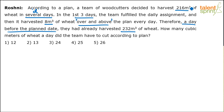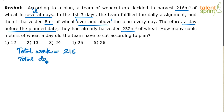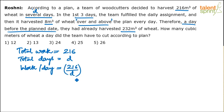This is very easy to solve. Total work to be done is 216. Total number of days is d. Work per day is therefore 216/d. For example, if they want to do it in 2 days: 216/2 = 108 cubic meters per day. If in 4 days: 216/4 = 54 cubic meters per day. That's the daily requirement.